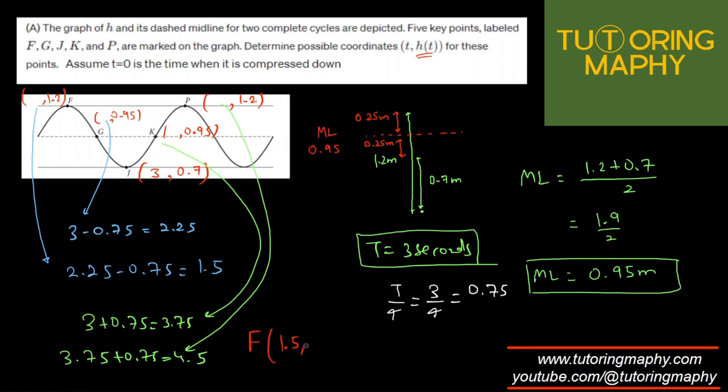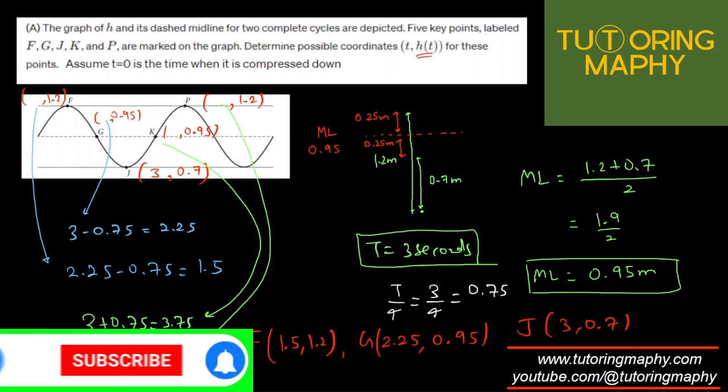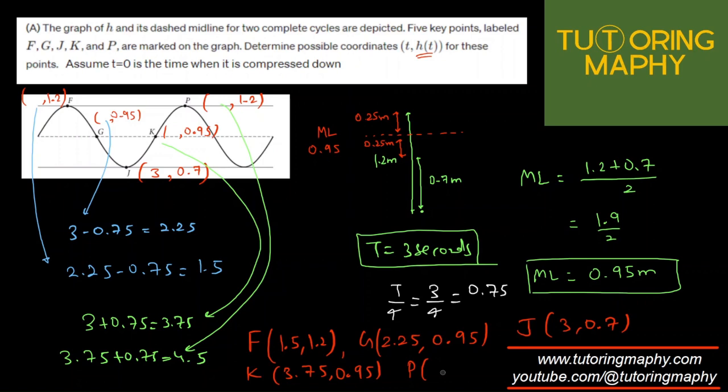Let's write the coordinates of these points separately. F is going to be (1.5, 1.2). G is going to be (2.25, 0.95). J is going to be (3, 0.7). K is going to be (3.75, 0.95). And P is going to be (4.5, 1.2).